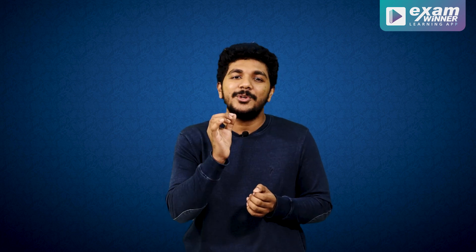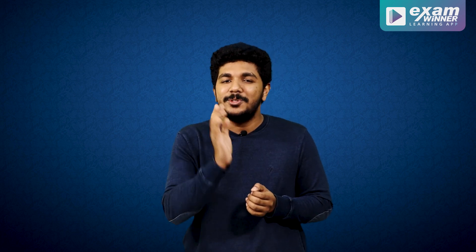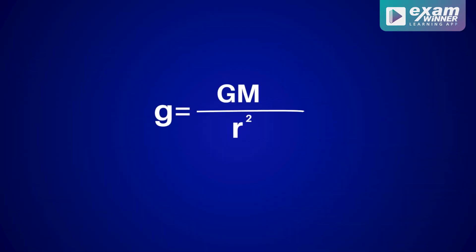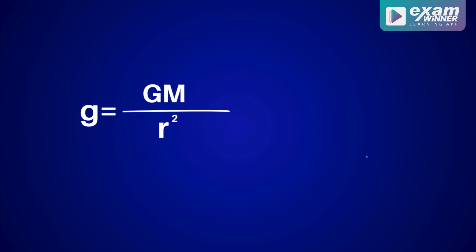At any point, the acceleration due to gravity approaches zero only at infinity. We can say g is equal to GM divided by r squared. This small r is the distance from Earth's center. At any point, we measure the distance between that point and the center.